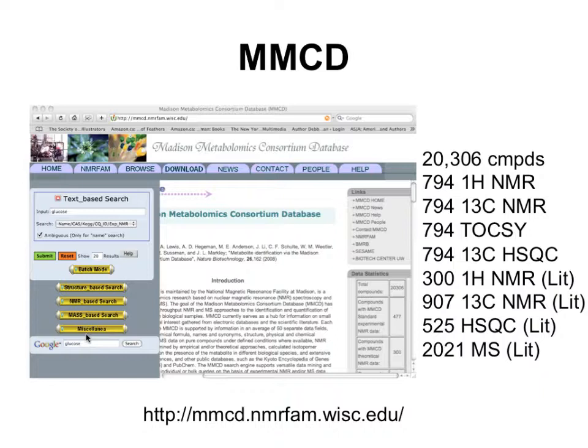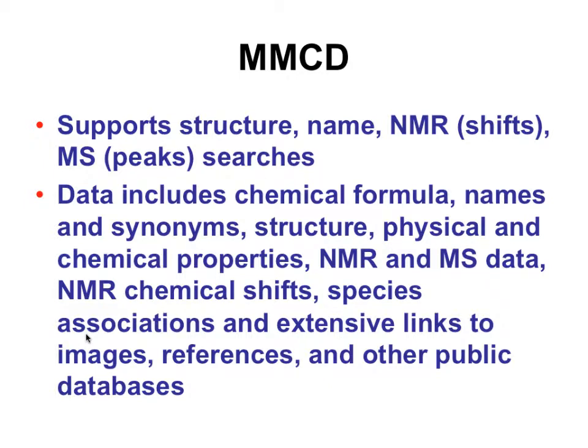The Madison Metabolomics Consortium Database is also based in Wisconsin, adjunct to BioMagResBank. They took BioMagResBank data and added literature chemical shifts for protons, carbon-13, and HSQC, and also collected literature MS data for about 2,000 metabolites. These are mostly NMR databases, but at least two or three have MS data and other kinds of data, including some predictive capabilities. They're not necessarily used every day, but are resources that could and should be mined.